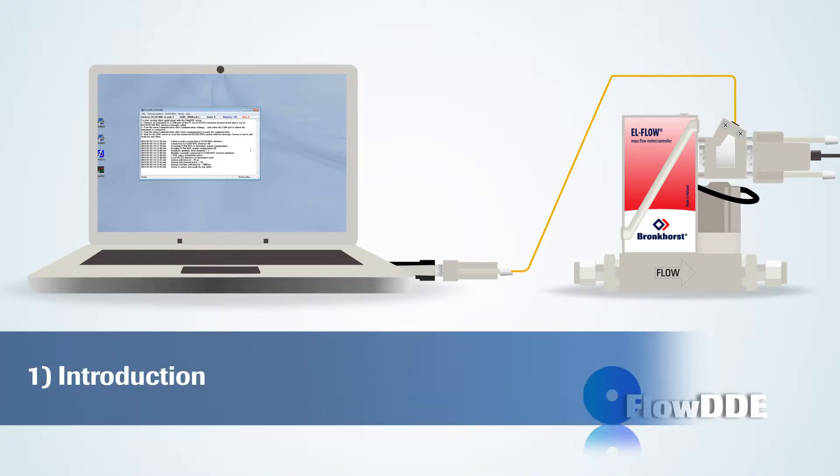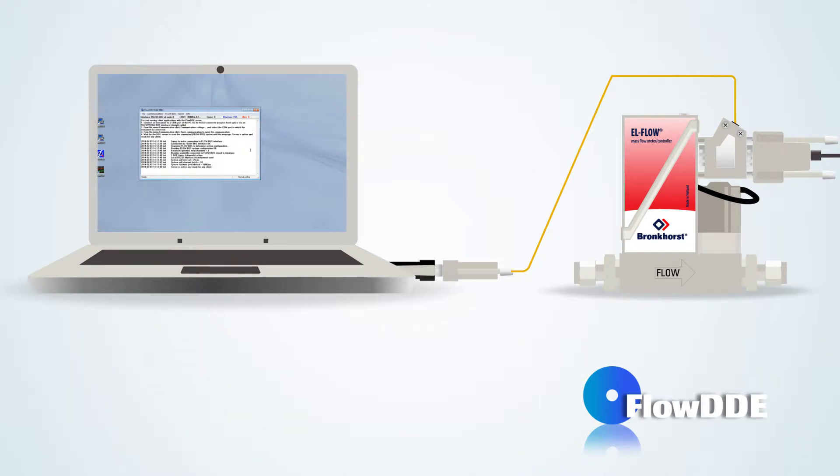DDE provides a basic level of inter-process communication between Windows applications. By using DDE commands sent by software to Flow DDE, data can be sent to or requested from digital instruments. Flow DDE handles all communication to the instrument and provides the data to applications.